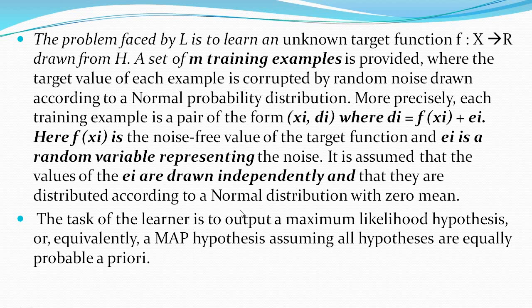Whatever target function we find, we are choosing any one of the training examples which are randomly drawn, and it also follows a normal distribution with zero mean. If you apply various types of learning algorithms, we will get the maximum likelihood hypothesis under these assumptions. We can also call the output a maximum a posteriori hypothesis. One more assumption is that all hypotheses have equal probability.